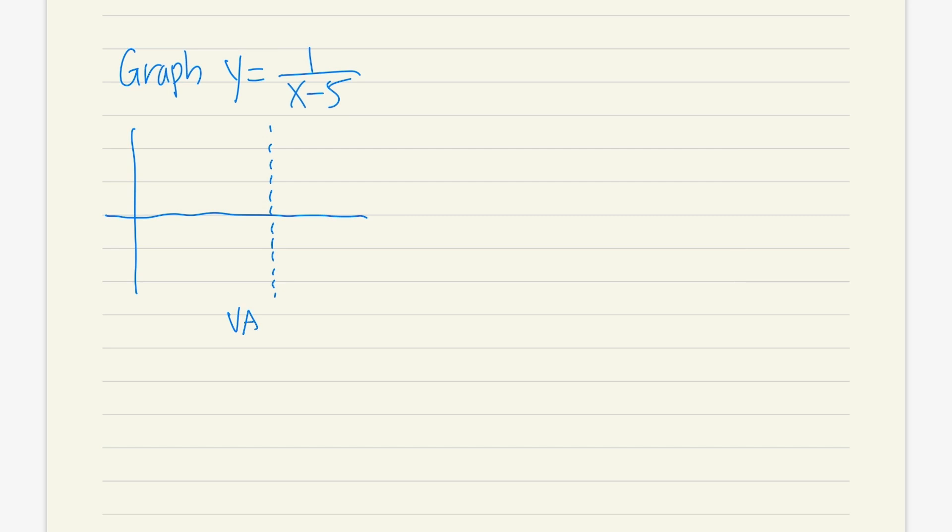We have done this before. So we should know that there is a vertical asymptote at 5. So I'll just say VA at x equals 5. And then the graph looks like this. And then like that. And then we are done.